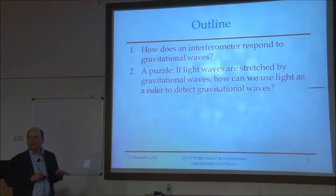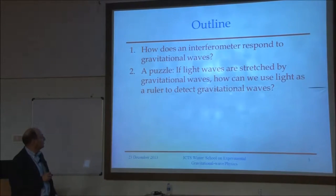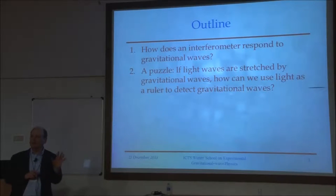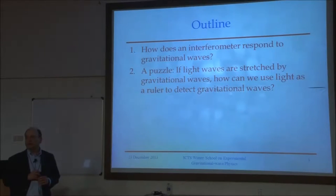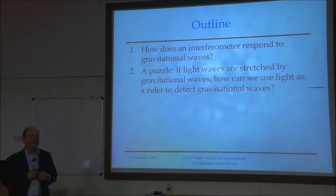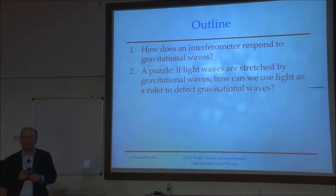I want us to look at how an interferometer responds to a gravitational wave — how that signal ends up coming out as a measured phase. When we're done with that, I want to raise and then dismiss, hopefully convincingly, a question that occurs to everyone thinking hard about this: namely, is the interaction between the gravity wave and the interferometer only with the freely falling masses, or does the gravity wave interact with the light in the instrument? And if it does — and it does — how does that change how we understand how an interferometer works?